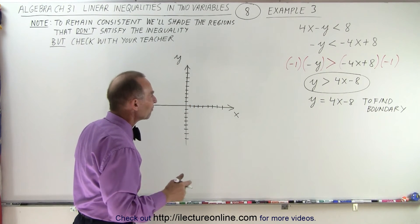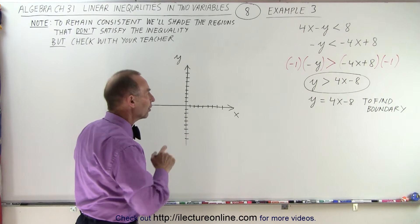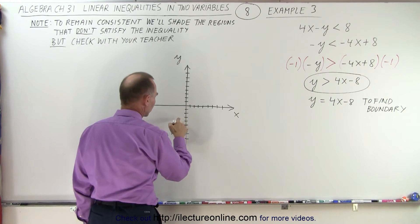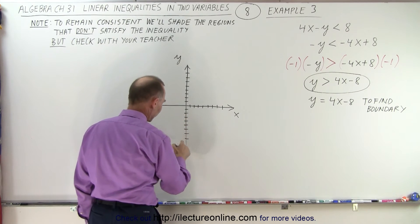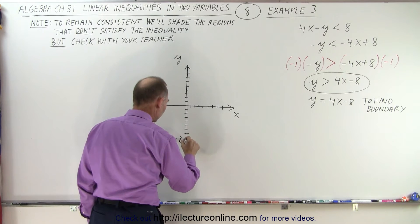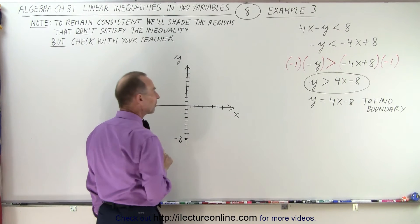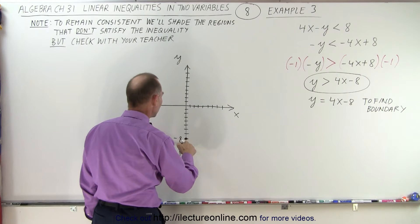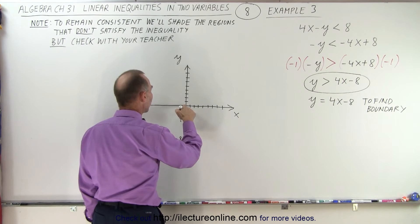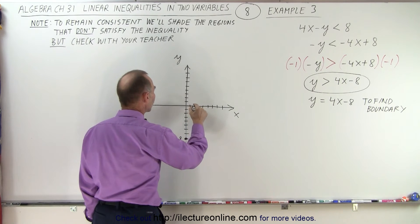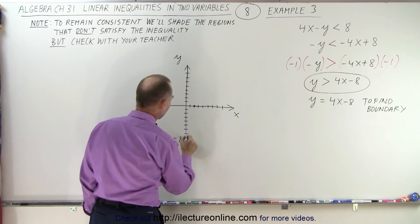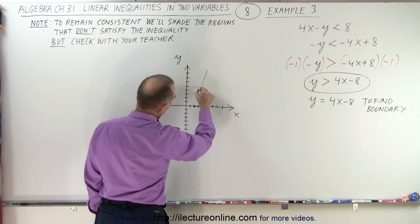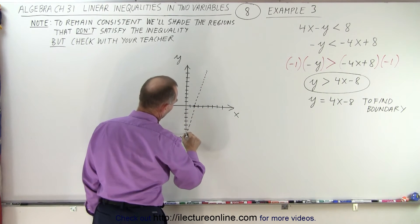First, we find the y-intercept, which is negative 8 — that point is right here. The line intersects at this point and has a positive slope of 4, which means it goes up 8 and over 2. And it's going to be a dashed line, so the dashed line is going to look like this.